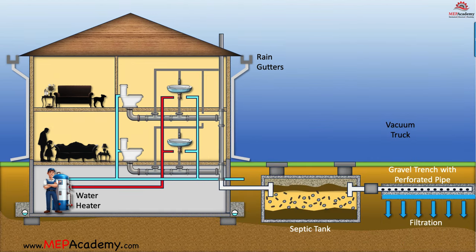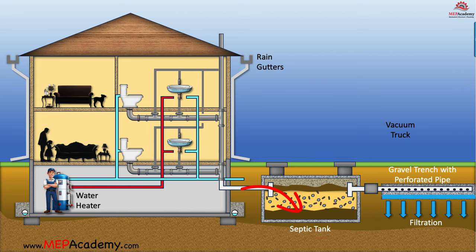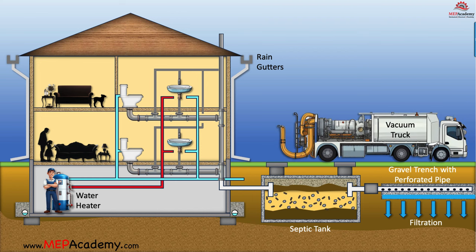However, some homes lack municipal wastewater treatment services. In such cases, the main drain pipe, which would typically lead to the municipal sewers, connects to a septic tank instead, often made of concrete or polyethylene. This tank separates solids from liquids before directing them to a leach field or drain field in the ground for natural filtration. Periodic pumping by a vacuum truck is necessary to ensure proper functionality.